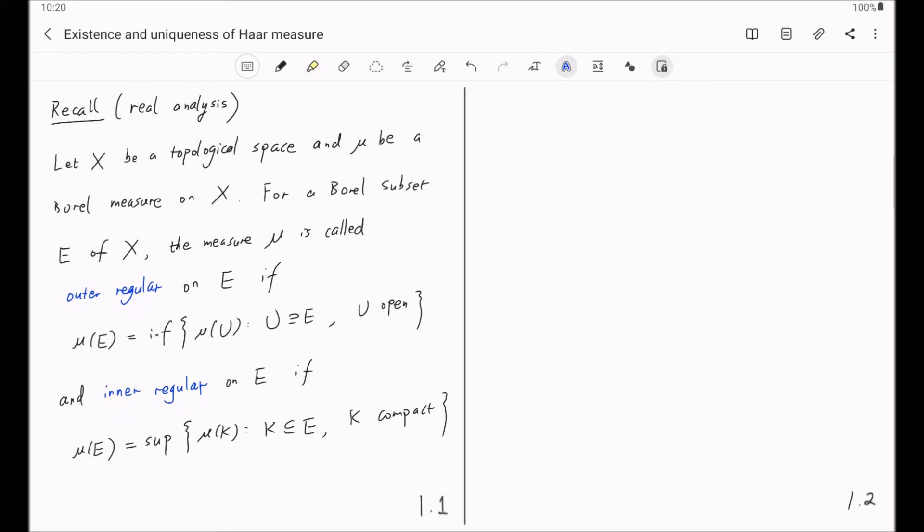With outer and inner regularities, we are ready to introduce the notion of Radon measures. The Radon measure on the topological space X is a Borel measure satisfying the following three properties: First, it is finite on all compact sets. Second, it is outer regular on all Borel sets. And thirdly, it is inner regular on all open sets. So if a Borel measure satisfies these three properties, then it is called a Radon measure. This is the first thing we want to recall.